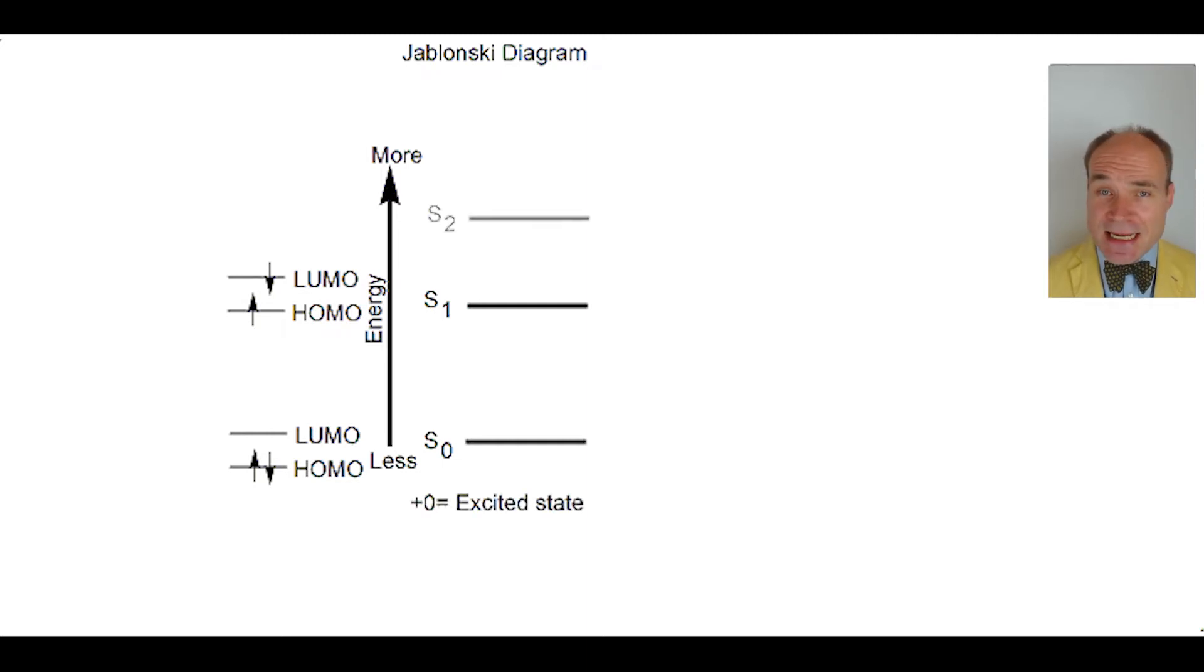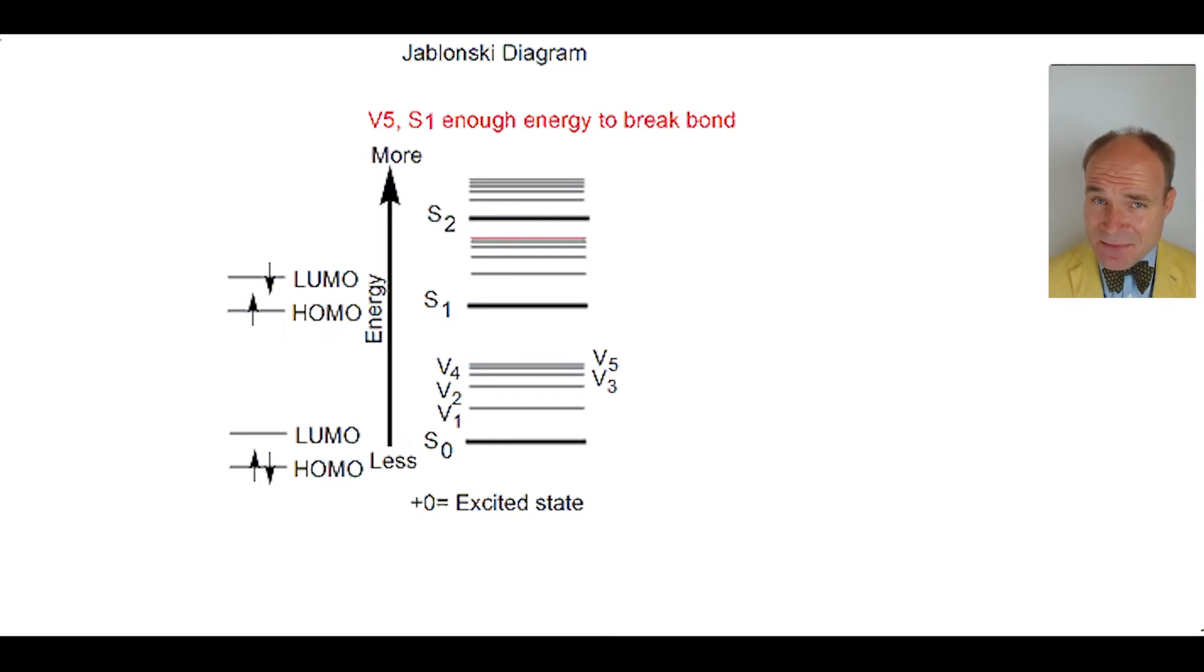Beyond this energy level is S2. Within each electronic state lie sublevels of different vibrational and rotational energies. The vibrations are shown here. They're important. For example, V5 of S1 can be enough energy to break some bonds. In general, as these energy levels are ascended, the bonds get longer and thus weaker.